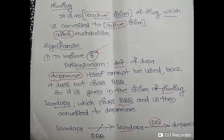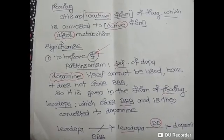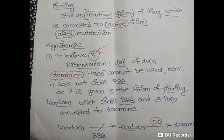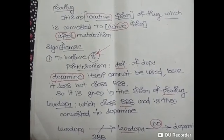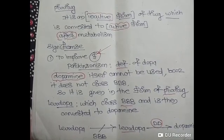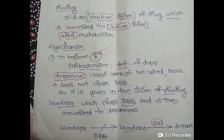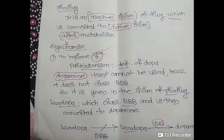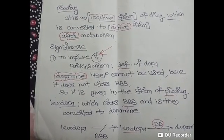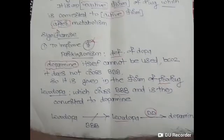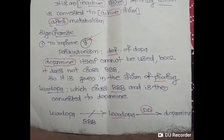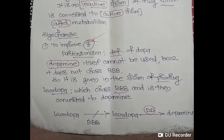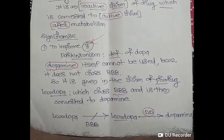The significance of prodrugs includes improving bioavailability, denoted by the symbol small f. For example, in Parkinsonism there is a deficiency of dopamine. Dopamine itself cannot be used because it does not cross the blood-brain barrier. So it is given as a prodrug, levodopa, which crosses the blood-brain barrier and is then converted into dopamine by dopa decarboxylase where it is needed.